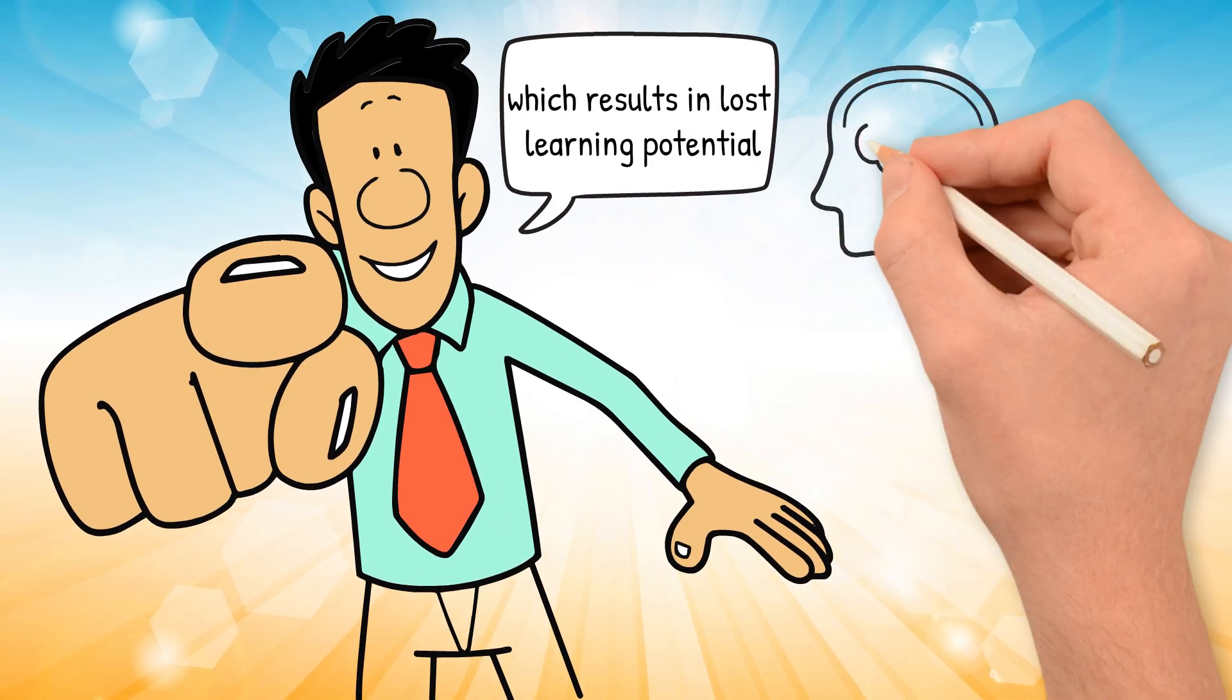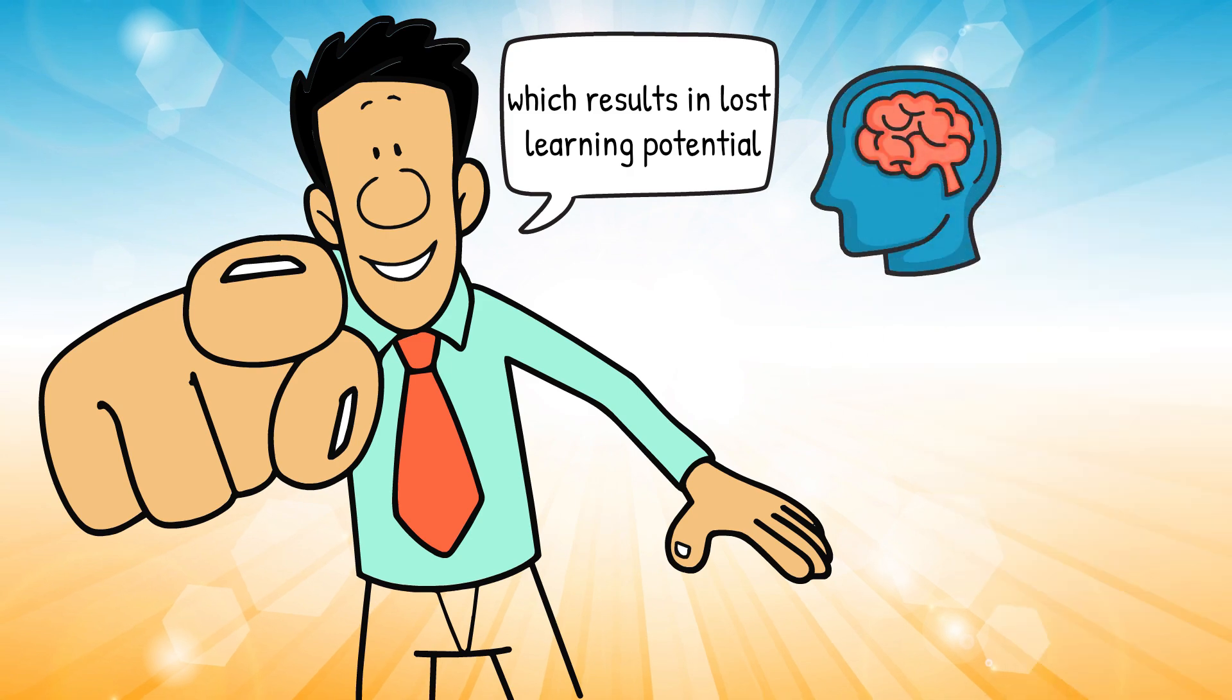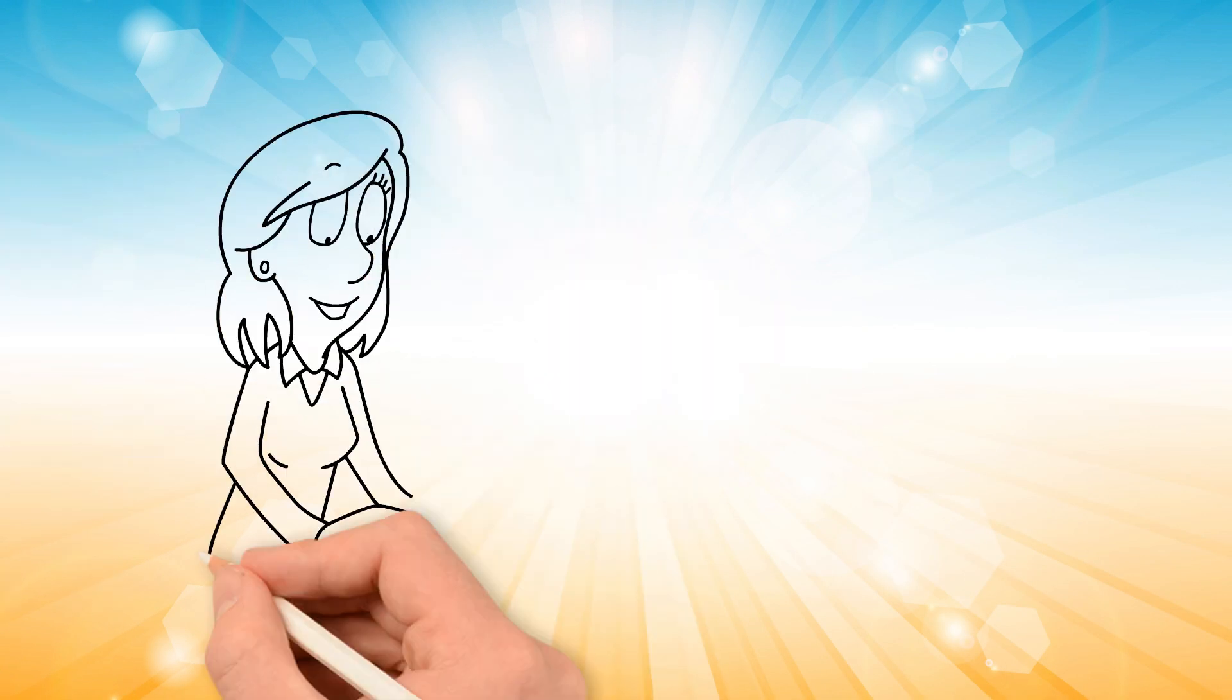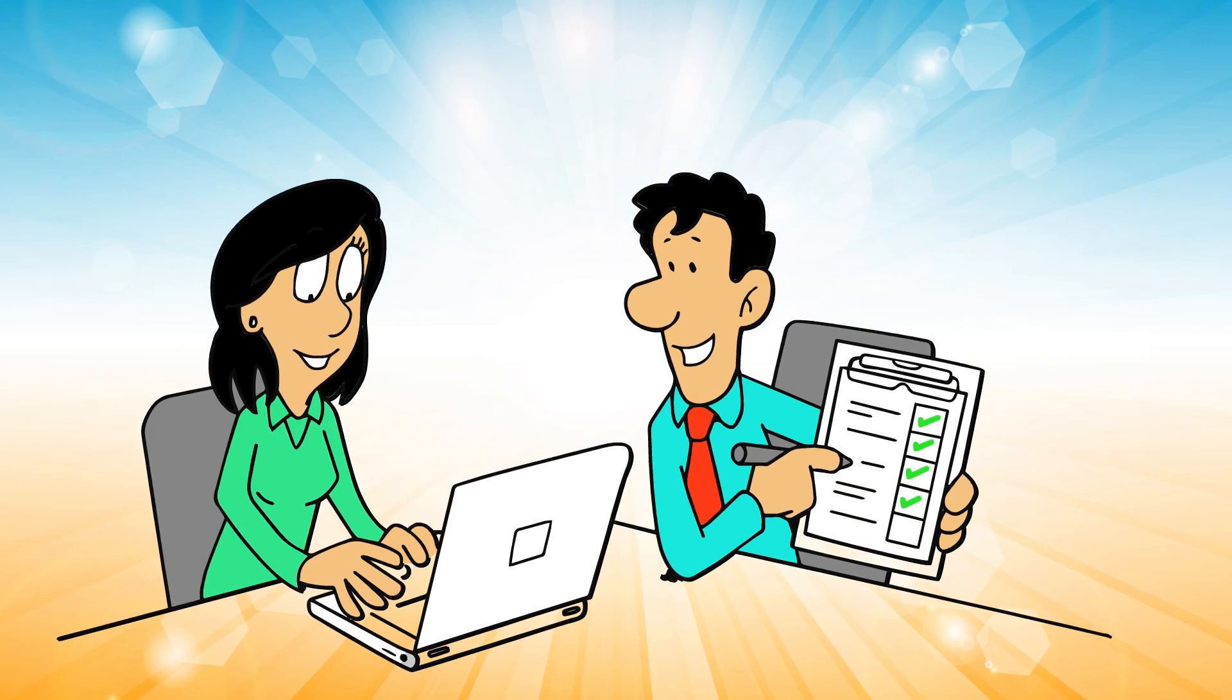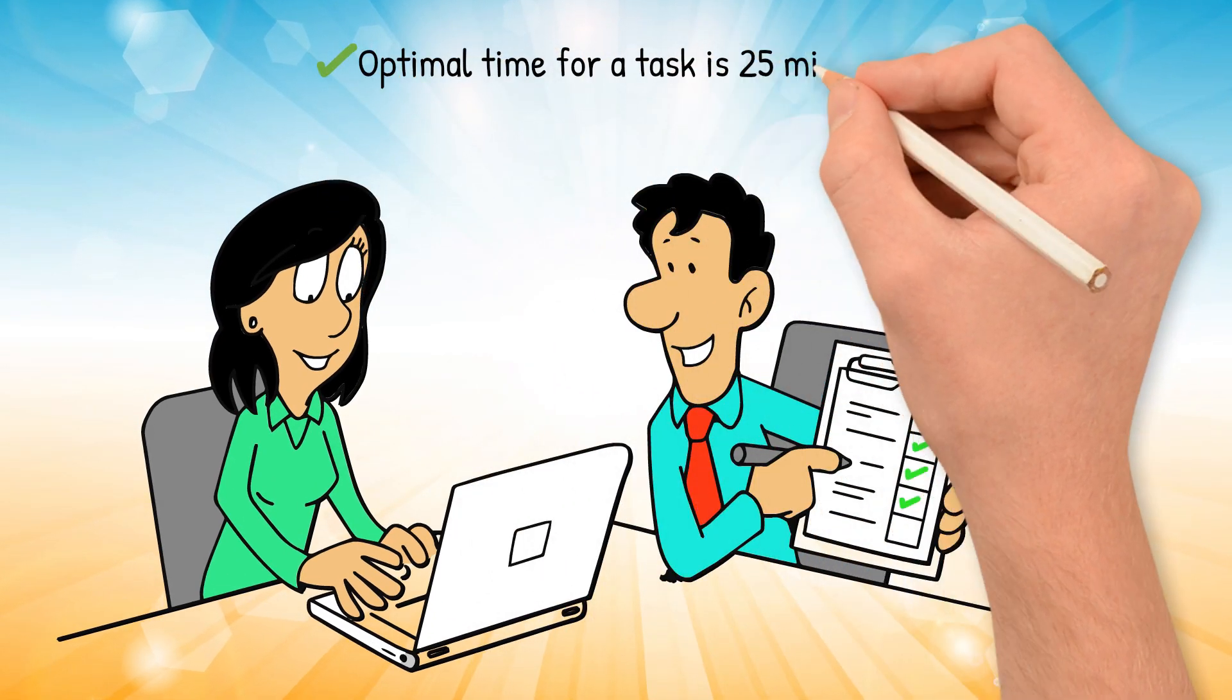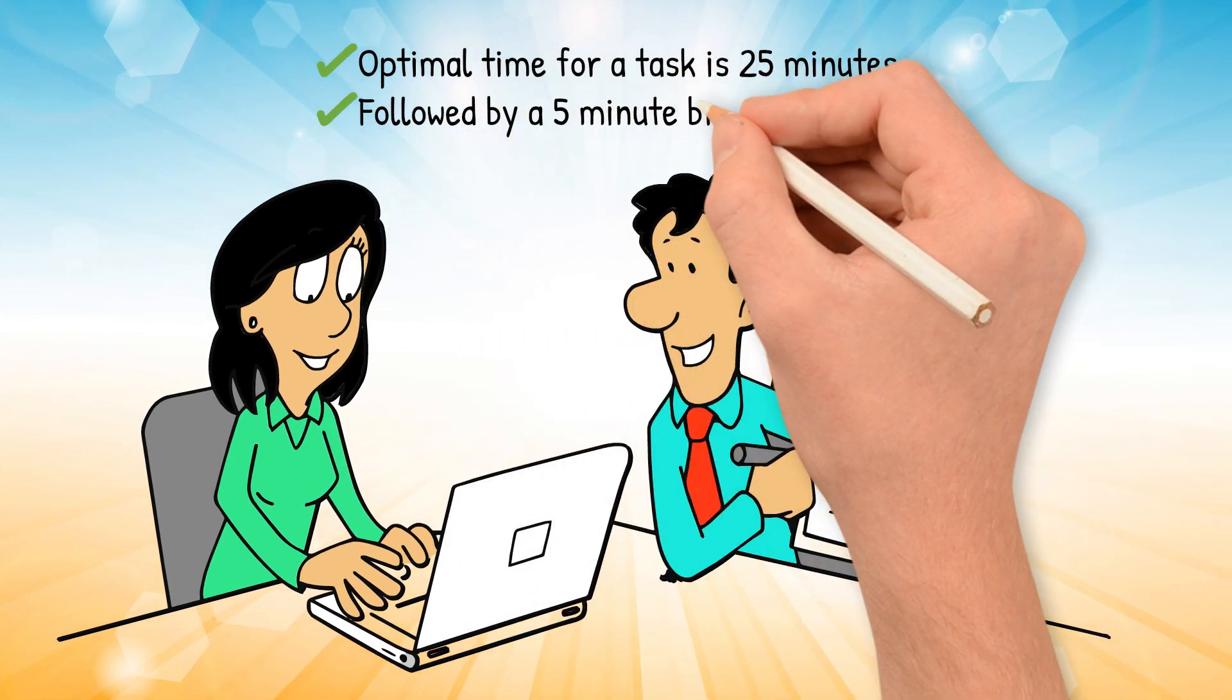One of the best ways to counteract this is to use the Pomodoro technique. This technique is based on the idea that the optimal time for a task is 25 minutes followed by a 5-minute break.